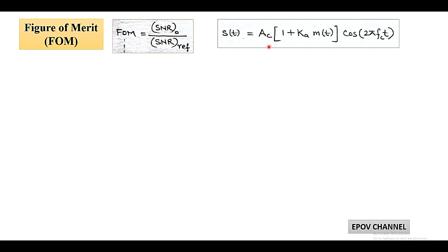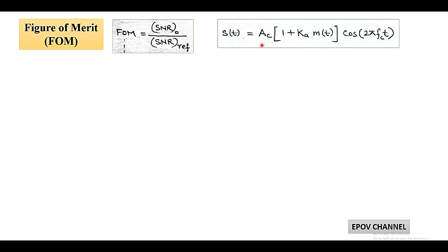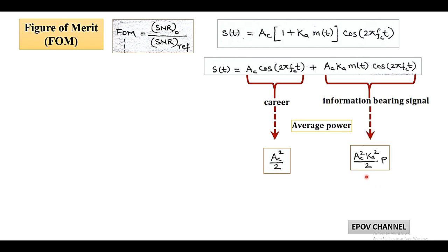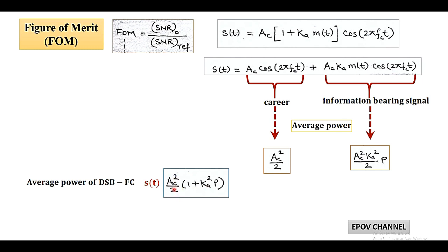Using this equation, we find the average signal power. Opening the bracket gives AC·cos(2πfct) + AC·KA·m(t)·cos(2πfct). The average power of the first term is AC²/2, and the second term containing the message signal has average power AC²·KA²/2 · P. After adding, the average signal power at the reference side becomes AC²/2 · (1 + KA²·P).